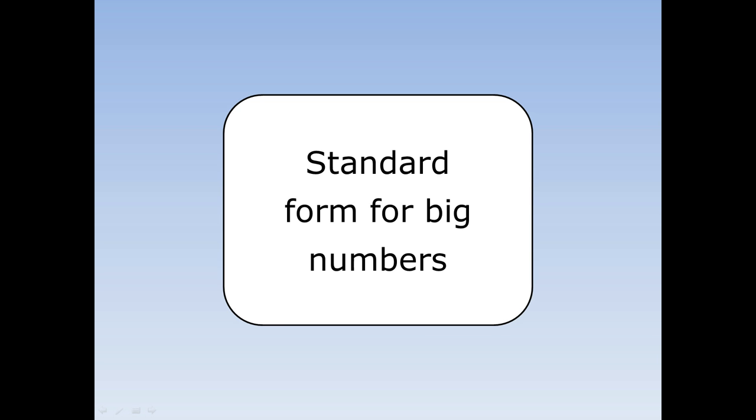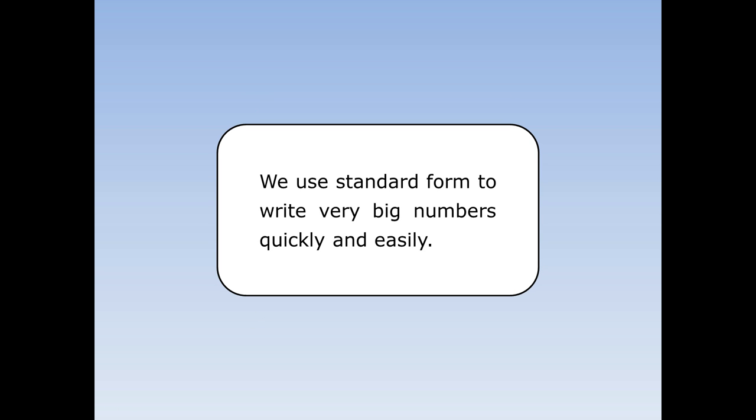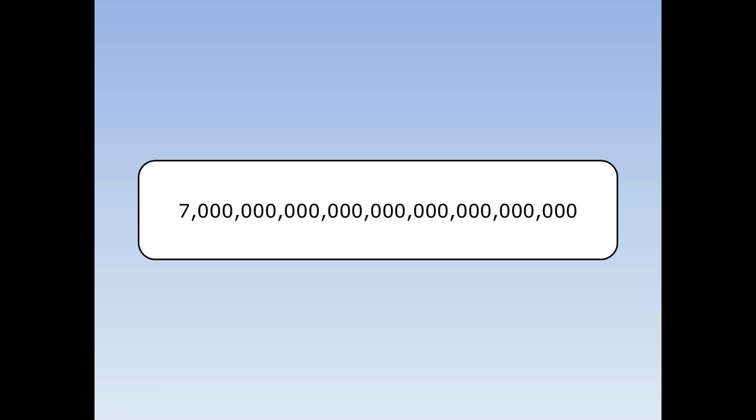Standard form for big numbers. We use standard form to write very big numbers quickly and easily. Look at this number: seven billion billion billion — the number of atoms in your body. There are 27 zeros, and this number takes a very long time to write out. So we can use standard form to write it quicker and easier.